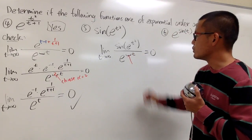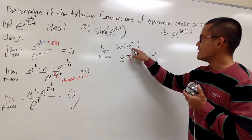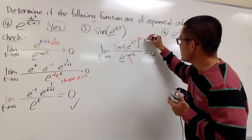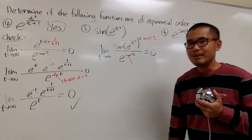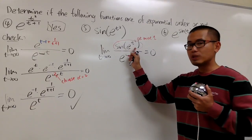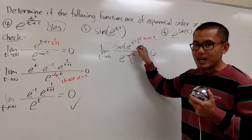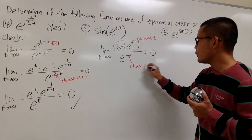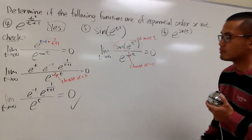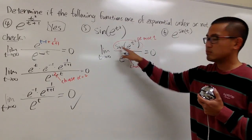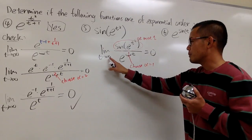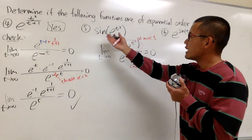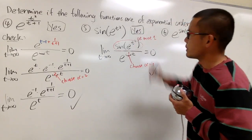This is scary looking, but inside the sine the whole thing is at most 1, because that's the range of sine — it doesn't matter what you have inside. Sine of anything is at most 1. So I can just choose alpha equal to 1 to make it work. When you plug infinity into e to the t, you get infinity in the denominator, so the limit is 0. Therefore, sine of e to the t squared is also of exponential order.